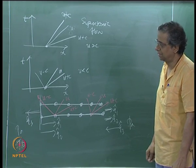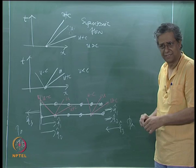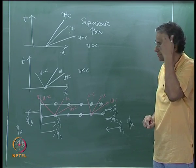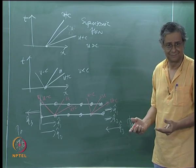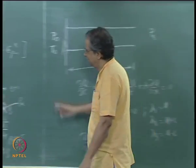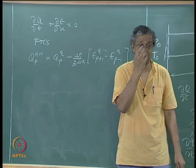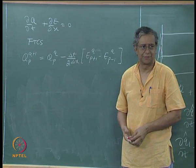Before implementing the boundary conditions, the question is: is FTCS going to be stable? We will come back to the original equation. How do we perform stability analysis? Now we have a system of equations, not just a single scalar equation. What do we do?